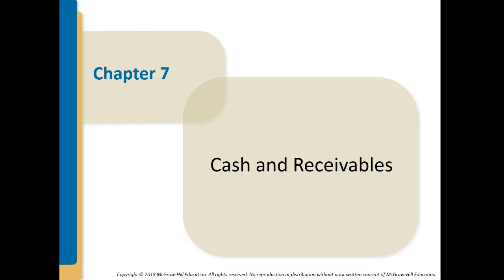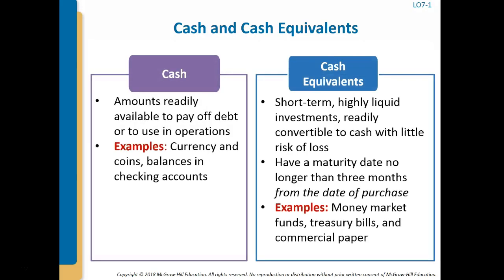Welcome to Intermediate Chapter 7 as we begin talking about cash and cash receivables. Cash includes currency and coins, balances in checking accounts, and items acceptable for deposit in these accounts, such as checks and money orders received from customers. These forms of cash represent amounts readily available to pay off debt or to use in operations without any legal or contractual restriction.